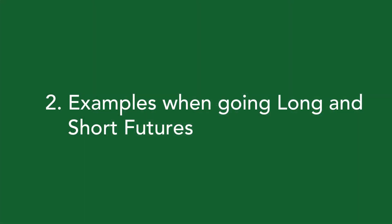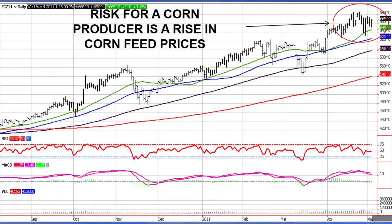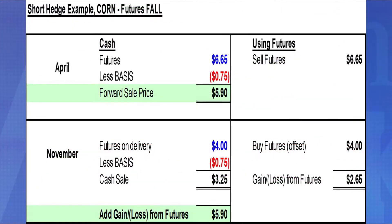Our second topic is using examples to explain the short sell hedge or the long buy hedge — it depends on which hat you're wearing. In our first example with corn futures, we're assuming futures are going to fall at harvest. In April, the cash market is $6.65 and the basis is $0.75 under futures. Assuming basis doesn't change, you sell futures today at $6.65. In November, futures fall to $4.00 a bushel. Your cash sale is $3.25, but the futures gain of $2.65 offsets the drop, giving you a net price of $5.90 a bushel.